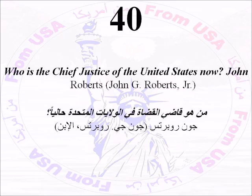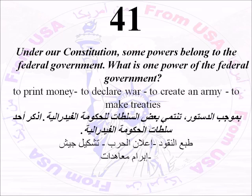Number Forty: Who is the Chief Justice of the United States now? John Roberts. Number Forty-One: Under our Constitution, some powers belong to the federal government. What is one power of the federal government? You just need to say one: to print money, to declare war, to create an army, or to make treaties.